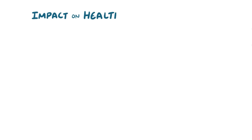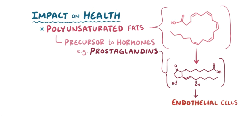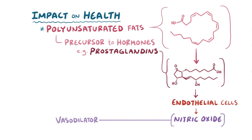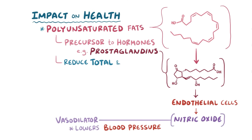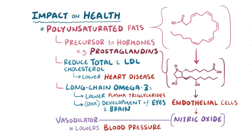Fats play a super important role throughout the body. Polyunsaturated fats are precursors for hormone-like molecules called prostaglandins that stimulate endothelial cells lining blood vessels to release nitric oxide. Nitric oxide is a vasodilator, so that decreases resistance to blood flow and in turn lowers blood pressure. Polyunsaturated fatty acids can also help reduce total and LDL cholesterol, linked to lower rates of cardiovascular diseases like heart attacks and stroke. Long-chain omega-3 fatty acids like DHA and EPA can help lower plasma triglyceride levels, which also protects against cardiovascular disease. DHA is also important in the development of eyes and brains of young infants.